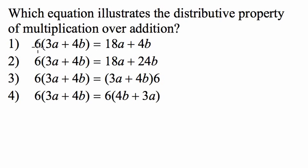So in all of these cases, what it's saying is we're taking 6 and multiplying it by the sum of 3a and 4b. So here, in all of these cases, we're doing that. So only in one of them are we doing it correctly. Which one is that?